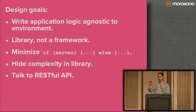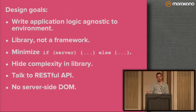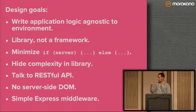It was important for us to talk to a RESTful API for all data because we already had one powering other apps, and Backbone is set up by default to speak REST. This also precludes real-time, which is another big area we didn't address. We didn't want a server-side DOM — implementations exist but they're slow and it just doesn't feel right. And we wanted it to be a simple set of Express middleware you can include in an Express app.